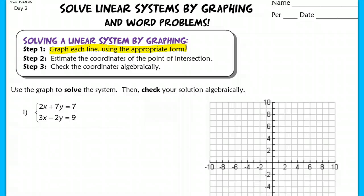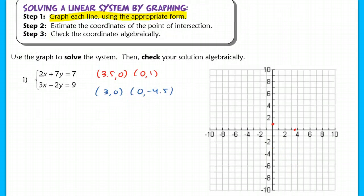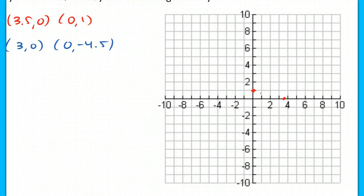Actually what I did was I started off with a system where the graph is very unreliable. If I were to try to graph this using intercepts, I have an intercept at 3.5, 0 and at 0, 1. For the second line in blue, I have intercepts at 3, 0 and 0, negative 4.5. I'm just using the cover-up method where I cover up the variable and solve for the other variable to find the intercept. So graphing the red line, I'm at 3.5 and 1, and the blue line at 3, 0 and 0, negative 4.5.